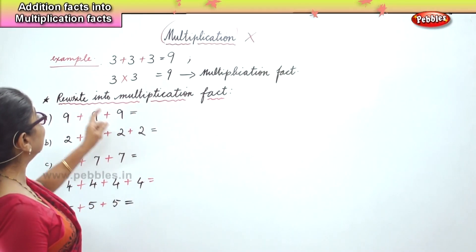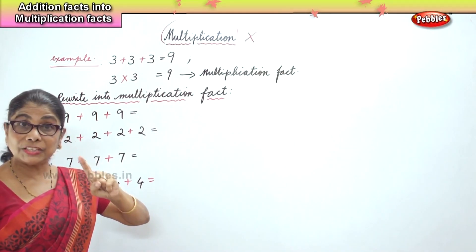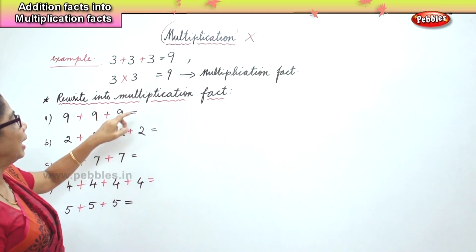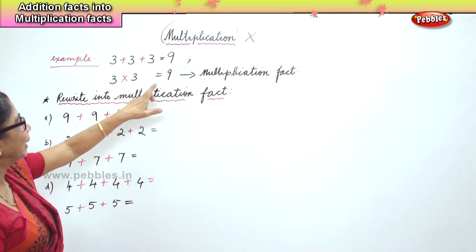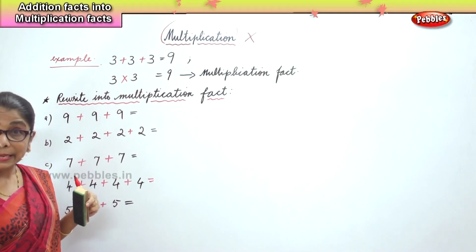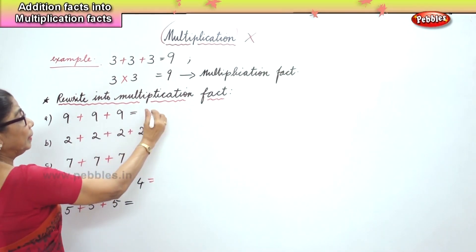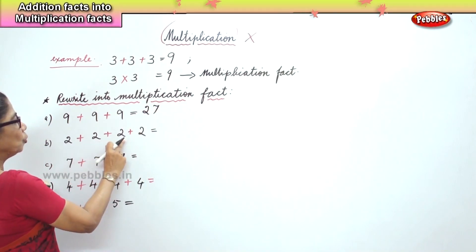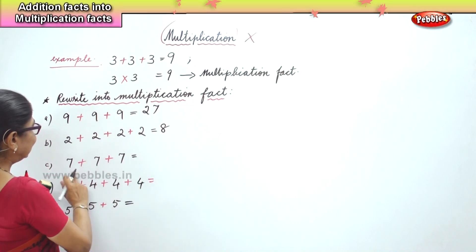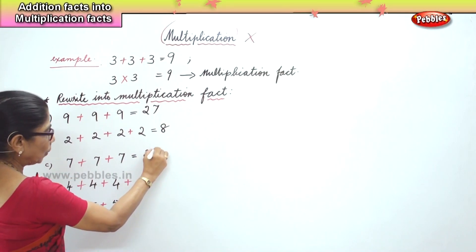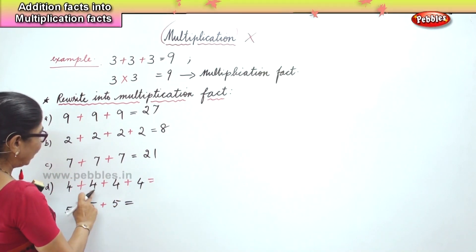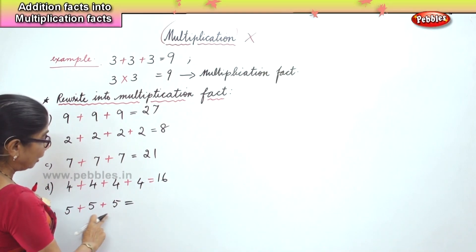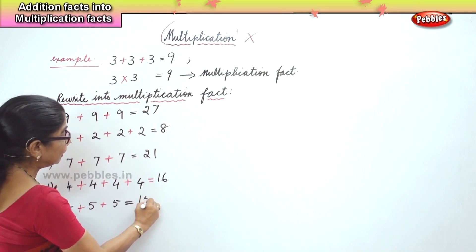What did we learn? Multiplication is repeated addition. 9 plus 9 plus 9: 9 plus 9 is 18, 18 plus 9 is 27. 2 plus 2 plus 2 plus 2: 4 twos are 8. 7 threes are 21. 4 fours are 16. 5, 10, 15.